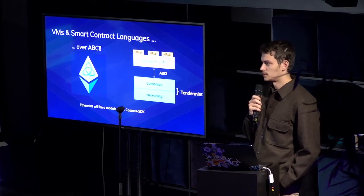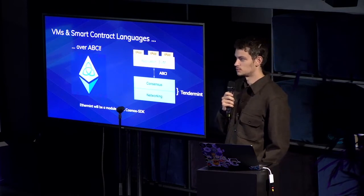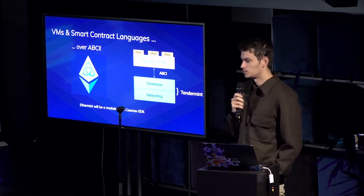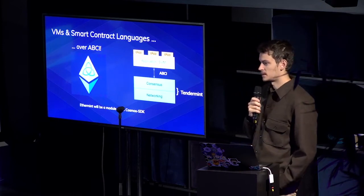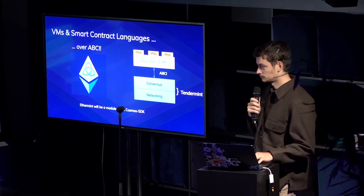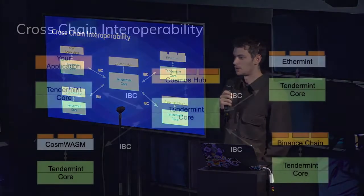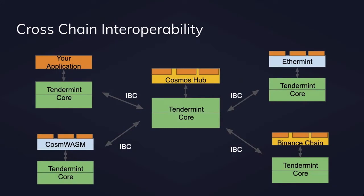When Ethermint launches, IBC and Pegzones will be available for people to use to communicate with the Ethereum chain. Some people who have already done this are Matic and Loom, and they both have EVM-compatible VMs on top of their Tendermint-based chain. So of course we're now building a lot more chains — it's not one chain to rule them all. The biggest problem that comes with this is the interoperability between chains. Chris Gose has spent the last four to five months building a 70-page spec for IBC.